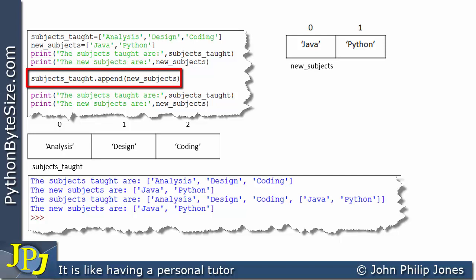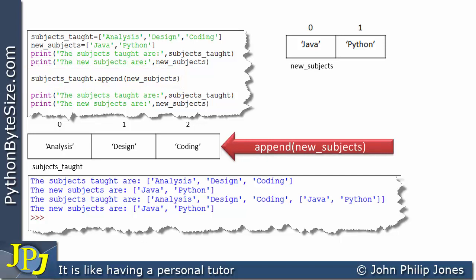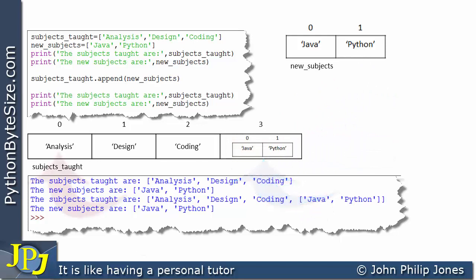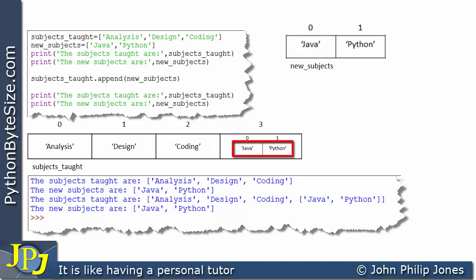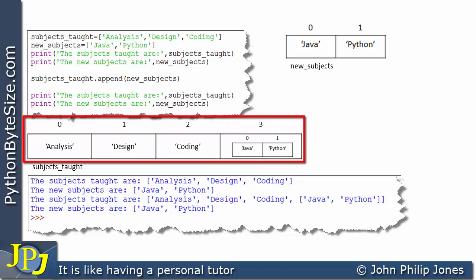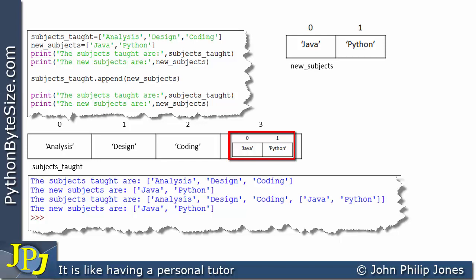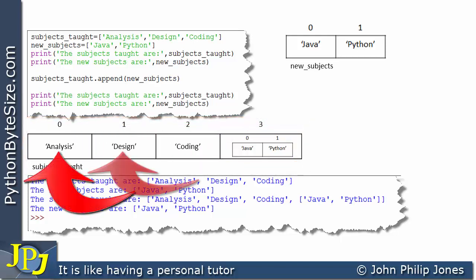This line is a message to the instance bound to subjects_taught. Schematically, we can see the message being sent, invoking the append method with the parameter new_subjects. The append method appends to the end of the subjects_taught list this entire list. The result is: string, string, string, list — where the inner list contains a string and a string. Those two strings are not directly inside the outer list's element; they are inside the nested list.